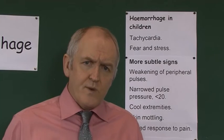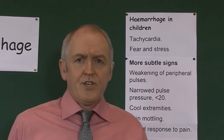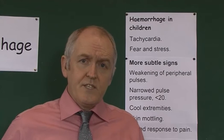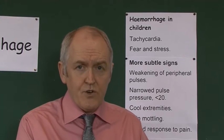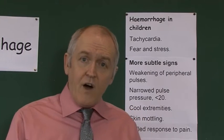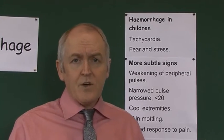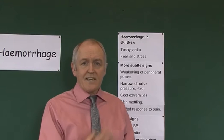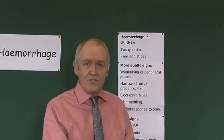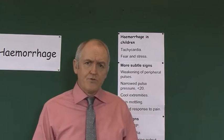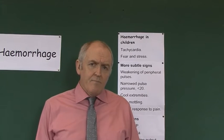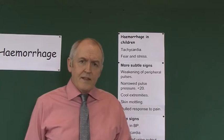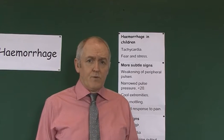The primary response that we can see in children to haemorrhage is tachycardia. This means you need to know how old your child is, what size they are, and what heart rate you would expect. It's not just what the child's overall heart rate is — it's whether that heart rate is tachycardic for that age. So we need to know about normal children's parameters, but there is a tachycardic response when children start to lose blood.